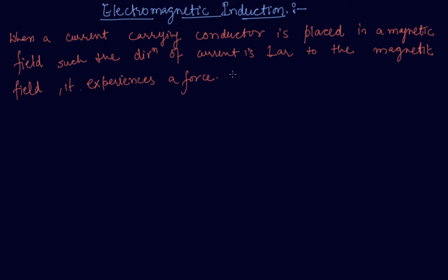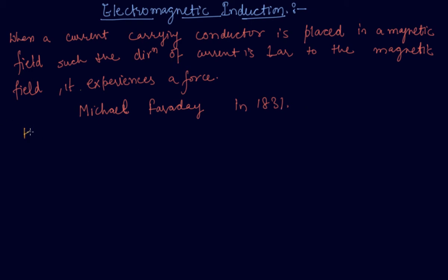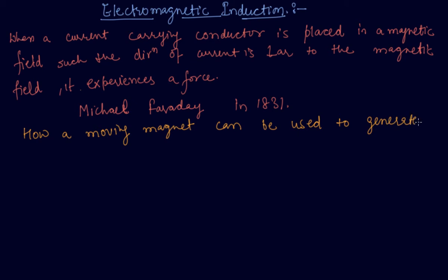Now, let us imagine a situation in which a conductor is already moving inside a magnetic field, or a magnetic field is changed around a fixed conductor. So what will happen? This was first studied by English physicist Michael Faraday in 1831. He studied how a moving magnet can be used to generate electric currents.